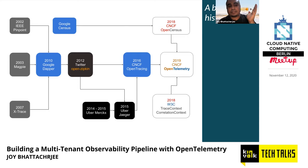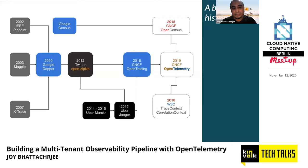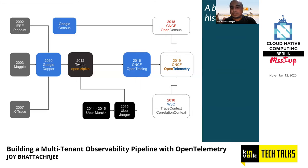Google published the Dapper paper in 2010. As usual with any Google paper, another company picked it up and tried to implement it — in this case, Twitter. Twitter implemented the Dapper paper into something called Zipkin internally. At this time, Twitter was using the Finagle system in their infrastructure, and they used Finagle with Cassandra as the backend storage to create this implementation called Zipkin. In 2012, they released it as an open source project called OpenZipkin.